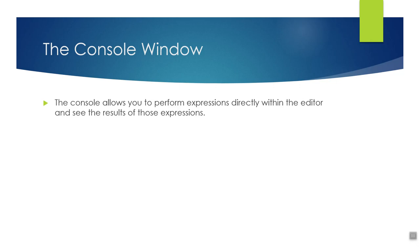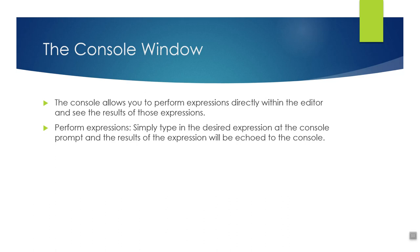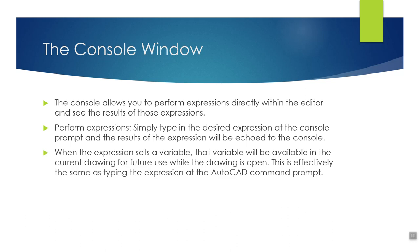The console window allows you to perform expressions directly within the editor and see the results — kind of like doing it at the command line, but you're inside the editor. You can type an expression at the console prompt and the results will be echoed back. It's useful for troubleshooting. When the expression sets a variable, that variable will be available in the current drawing for future use. So if you say setQ ABC equal to 1.75 and then go to AutoCAD, ABC equals 1.75 in that session.